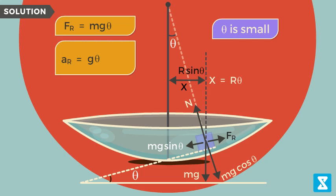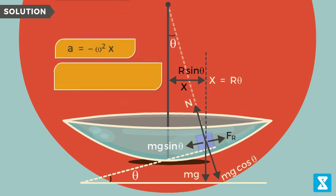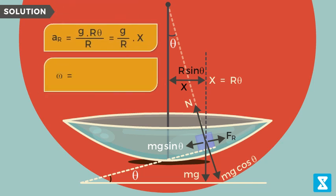Restoring acceleration is g into R theta divided by R, or g by R into x. Thus angular frequency omega is equal to square root of g by R.